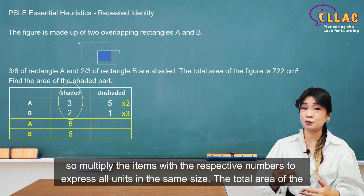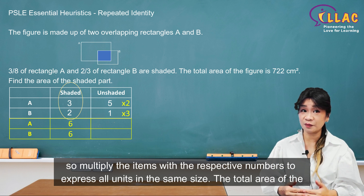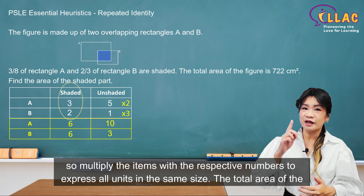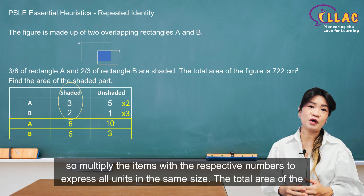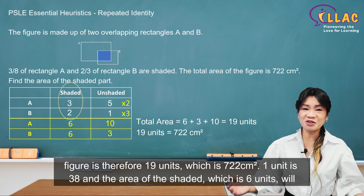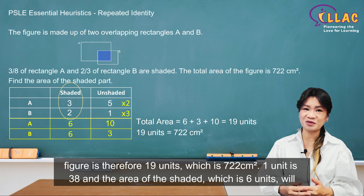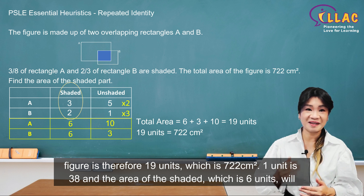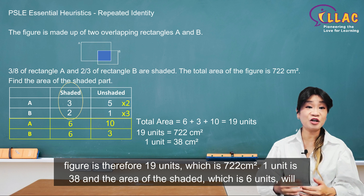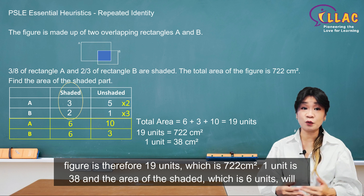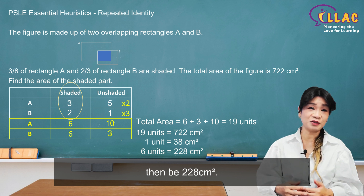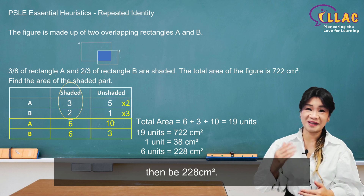Multiply the items with the respective numbers to express all units in the same size. The total area of the figure is therefore 19 units, which is 722 cm². 1 unit is 38 cm², and the area of the shaded part, which is 6 units, will then be 228 cm².